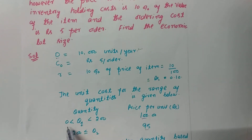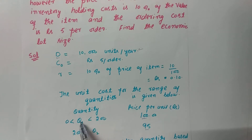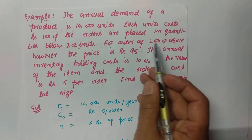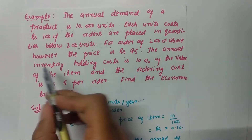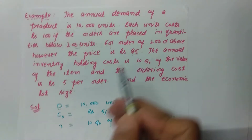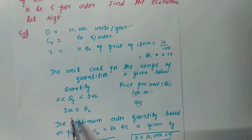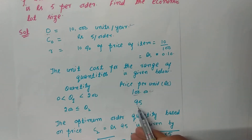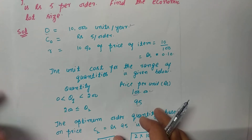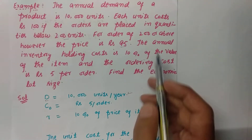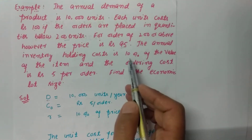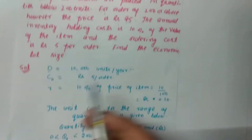So if the quantity ordered is from 0 to below 200 units, the price is 100 rupees. For orders of 200 units or above, the price is 95 rupees — meaning there is a discount of 5 rupees. The annual inventory holding cost is 10% of the item value.